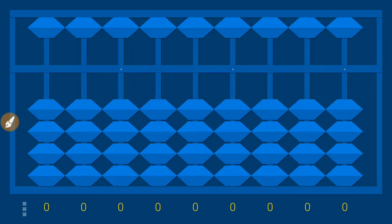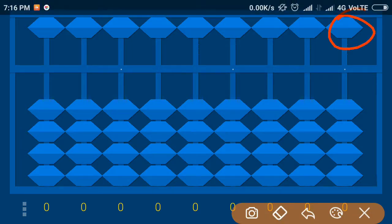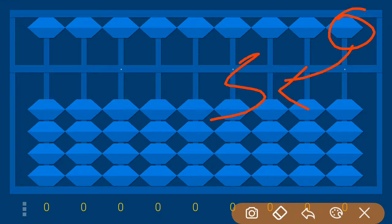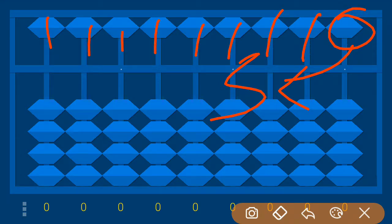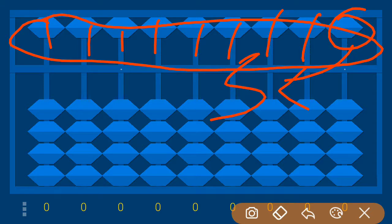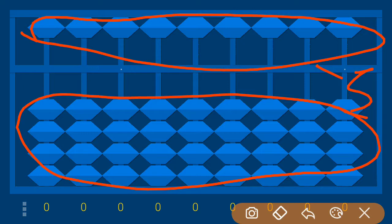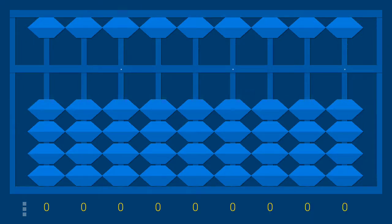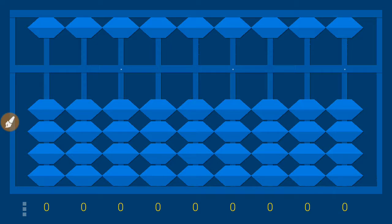First we are going to learn how to count on an abacus. The upper bead — the one above the divider — has a value of five. The lower beads each have a value of one. So the top bead is worth five and each bottom bead is worth one. That is the first teaching.